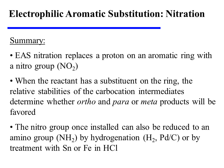In summary, EAS nitration replaces a proton on an aromatic ring with a nitro group. When the reactant has a substituent on the ring, the relative stabilities of the carbocation intermediates in the sigma complex determine whether ortho and para or meta products will be favored. And the nitro group, once installed, can be reduced to an amino group, if desired, by hydrogenation or by treatment with tin or iron in HCl.